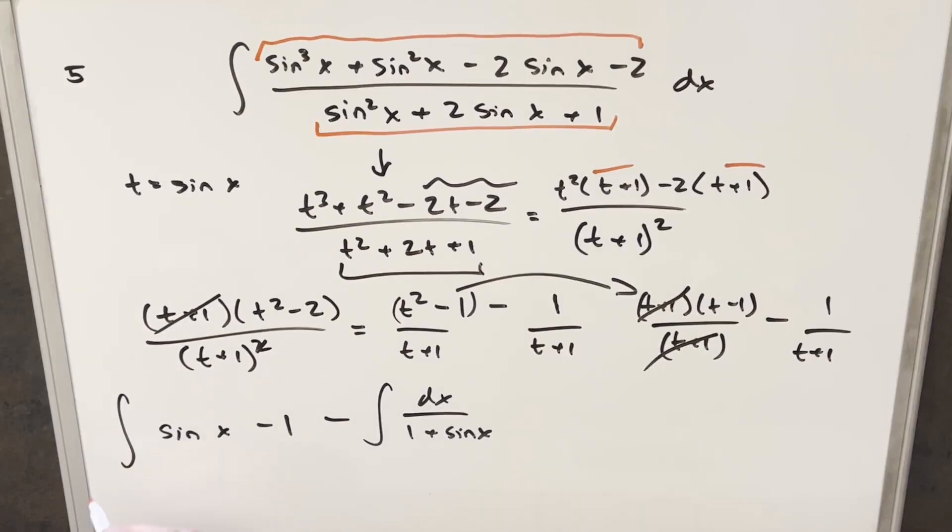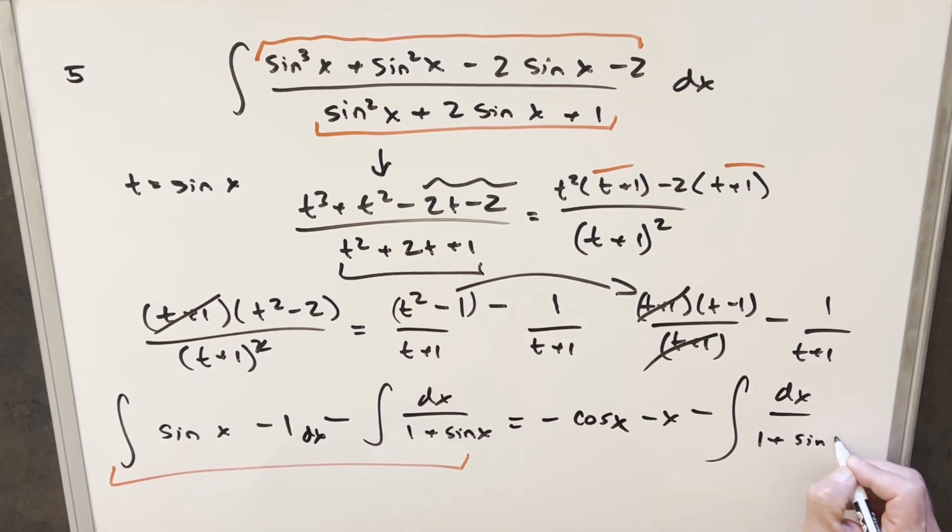Okay, so you notice now that after all that algebra, we've got a lot of simplification and a much simpler looking integral. So we'll start with this and just integrate this. And I forgot a dx right here. Sorry about that. So we'll integrate sine x, and that's going to give me minus cosine x here. And then integrating the 1, that's just going to give me a minus x. And then we have this other integral left to deal with: dx over 1 plus sine x.